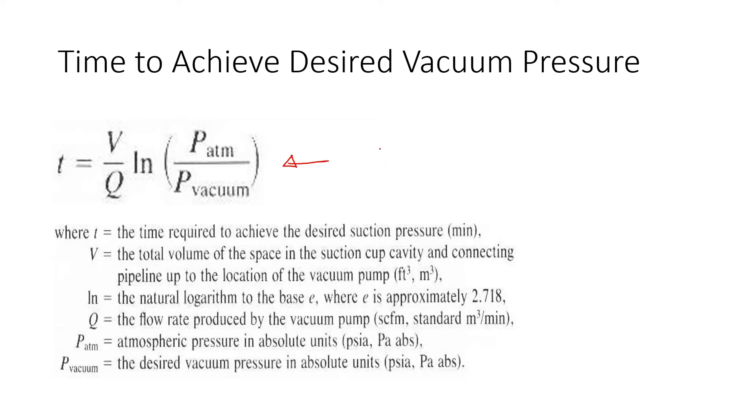So typically, gauge pressure is given and then you add the atmospheric pressure. Now, typically the atmospheric pressure at sea level is 14.7 psi. That's the top one and the bottom one is whatever that vacuum pressure is in absolute values.